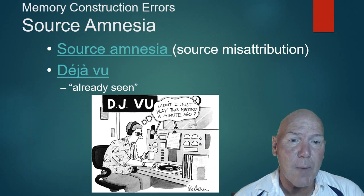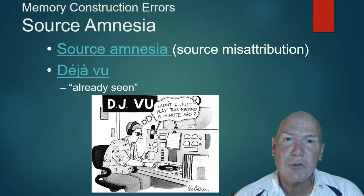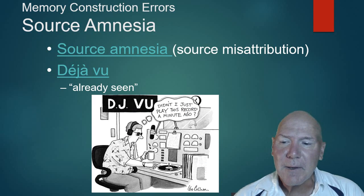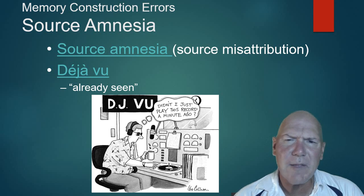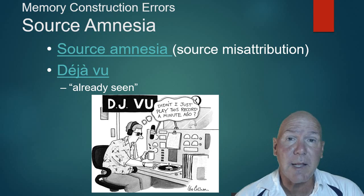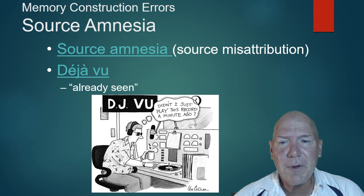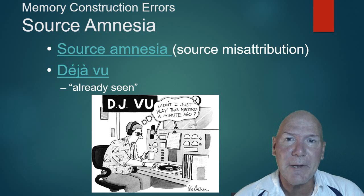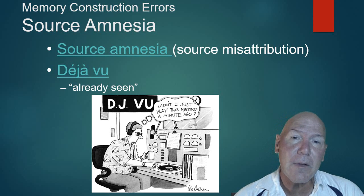Source amnesia is another phenomenon — we attribute something to a different source than where it actually came from. For example, a friend might say, 'You remember when you said this?' and you'd insist you never said it. They're not lying; they're suffering from source amnesia. It's not an unusual phenomenon, and it's related to déjà vu.